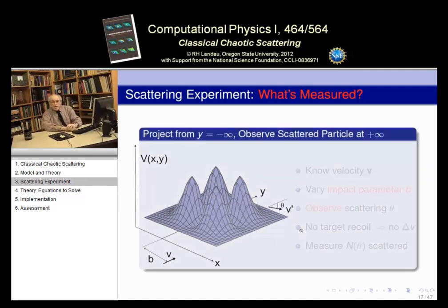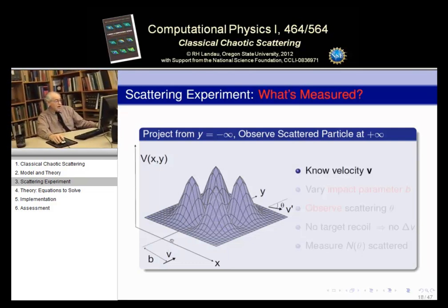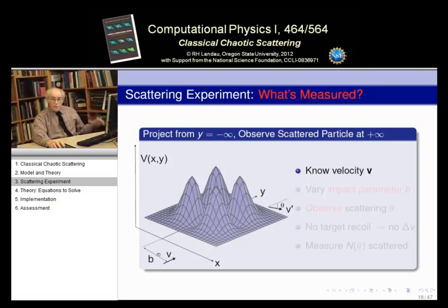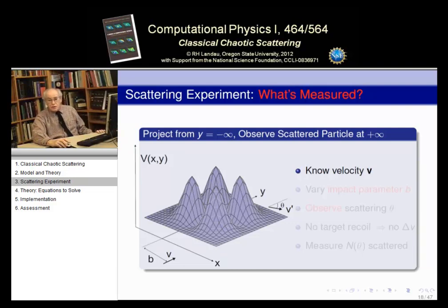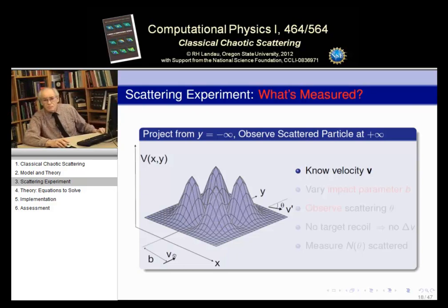In a scattering experiment — by definition — we start with a particle having a known velocity v, and we start it at minus infinity, far away from wherever the potential is. So far away, in fact, that we can say the potential vanishes at minus infinity. The particle we send in, called the projectile, has some known velocity v. As the experimentalists, we can control what that velocity is, the type of particle, and what angle we send it in at.